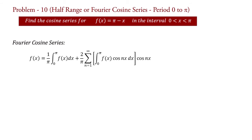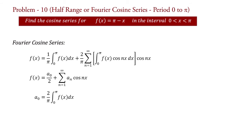In decomposed form, it is also written as f(x) equal to a₀ by 2 plus summation n equal to 1 to infinity aₙ cos(nx), where a₀ equal to 2 upon pi integral 0 to pi f(x) dx.